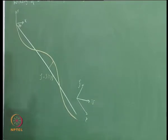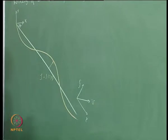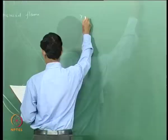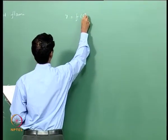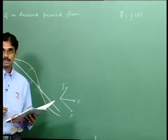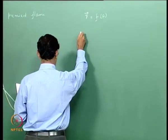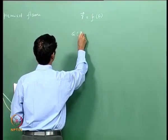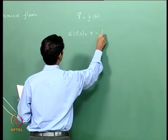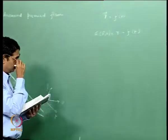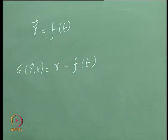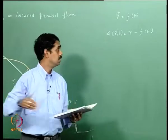This is the geometry, and the angle theta is the angle the mean flame makes with respect to the laboratory coordinates. In general I can say r equal to f of t, where r is the spatial coordinates of the flame. I can define a function g of r comma t equal to r minus f of t.